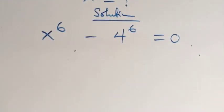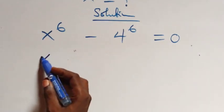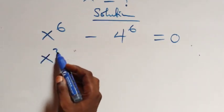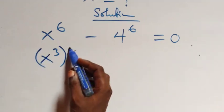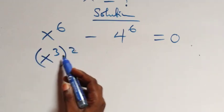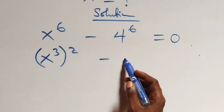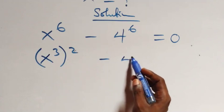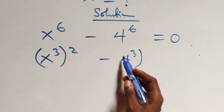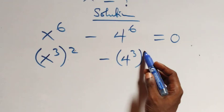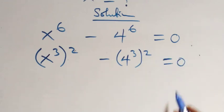The next step, we can rewrite this as x raised to the power 3, raised to the power 2 — since 2 times 3 gives 6 — minus 4 raised to the power 3, then raised to the power 2, equals 0.